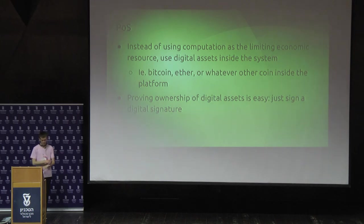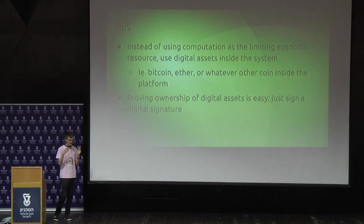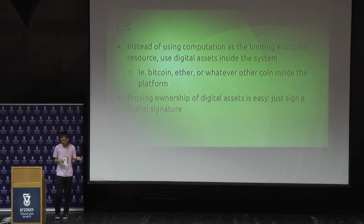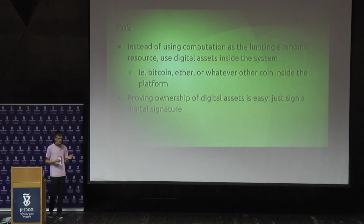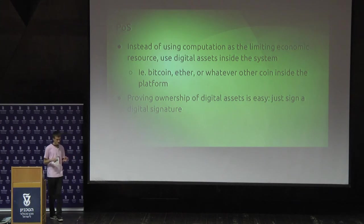Proof of stake. The idea is that instead of using computation as the limiting economic resource, you use digital assets inside the system. So instead of saying $1,000 of computing hardware equals one vote, it's $1,000 of Bitcoin equals one vote, or $1,000 of Ether equals one vote. Proving ownership of digital assets is easy — all you do is make a digital signature. The blockchain itself already keeps track of how many units of Ether everyone has, so you just sign to prove you are voting for some particular block.